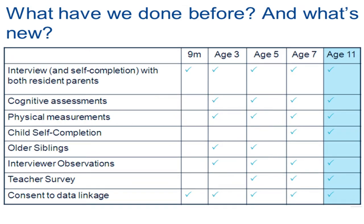The Millennium Cohort Study has been much better planned and resourced than the earlier cohort studies — it sees participants at nine months, three years, five years, seven years, and the age 11 survey is currently in the field. Whereas the older cohorts only asked mothers about the child, this cohort also asks about the father, who can in fact be the main respondent, though rarely is. Again there's lots on cognitive assessment, physical measurements, and questions asked of the teacher — in some ways a very similar basic method of data collection.